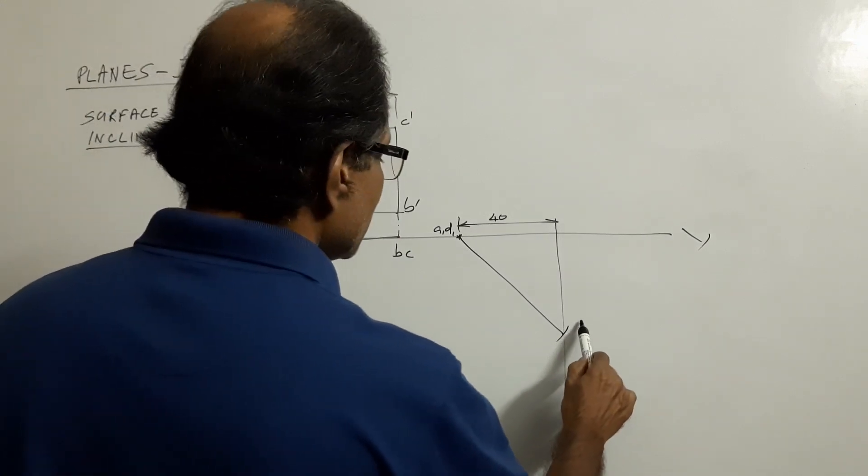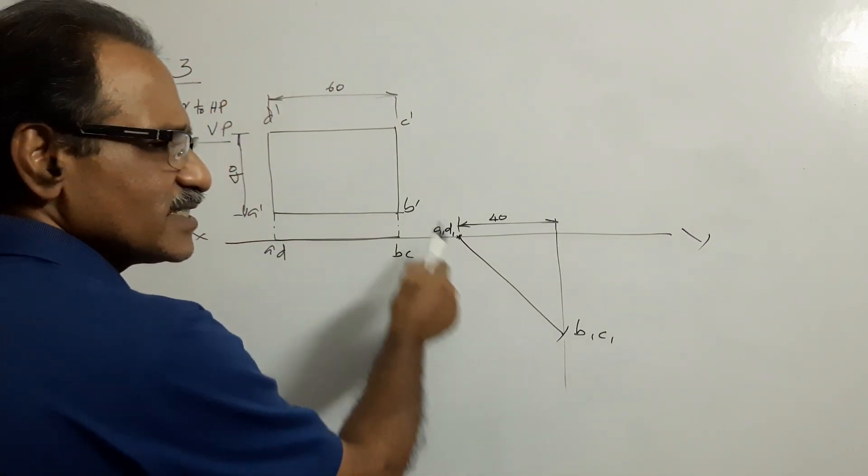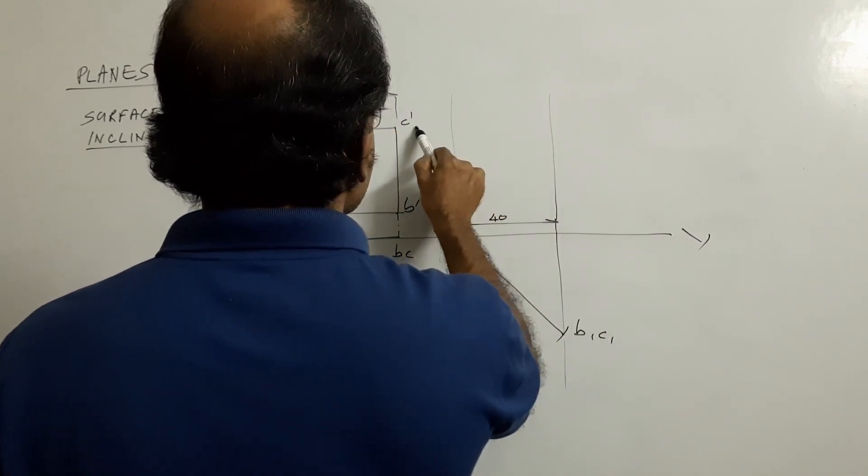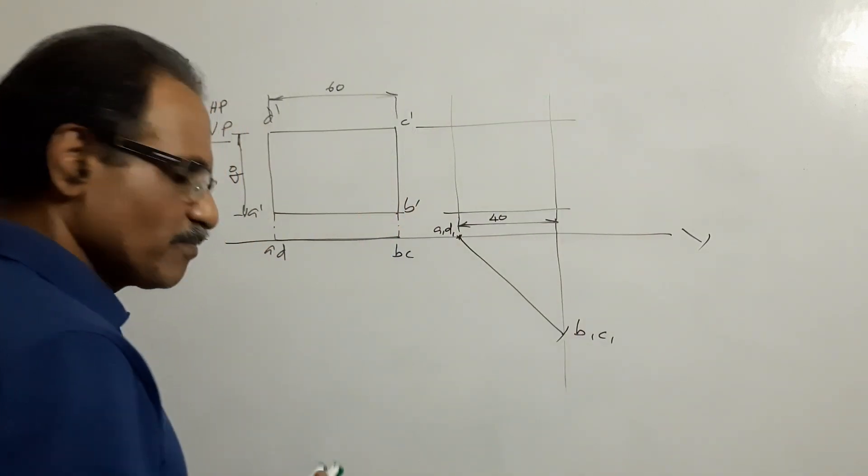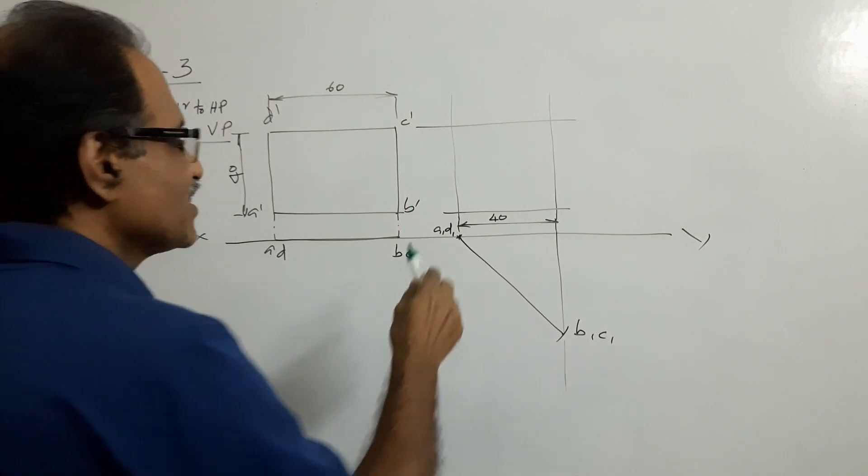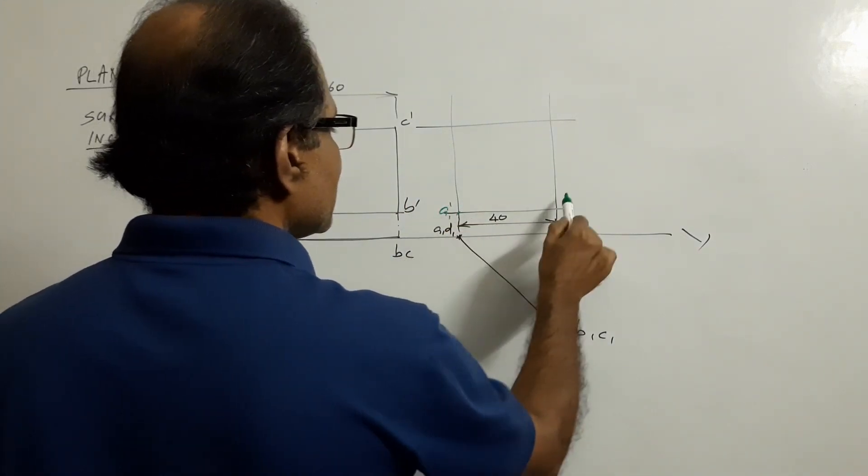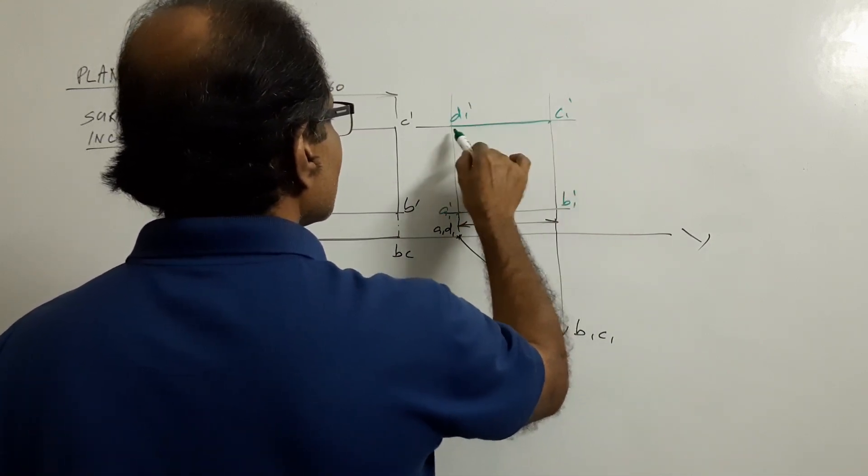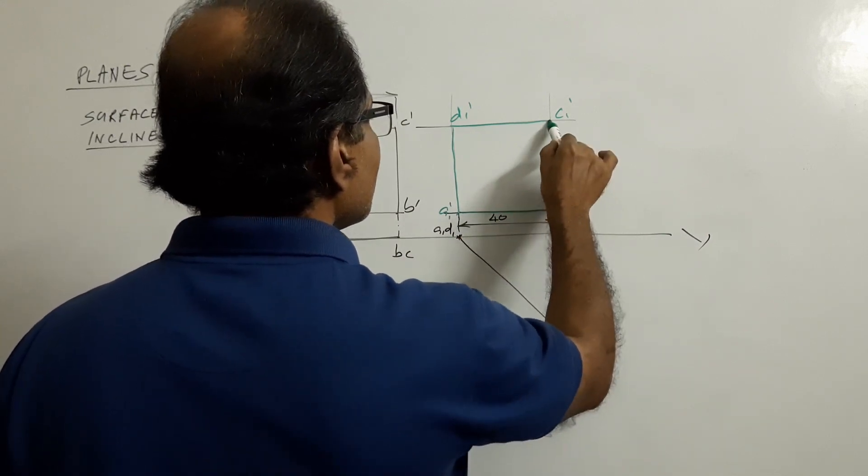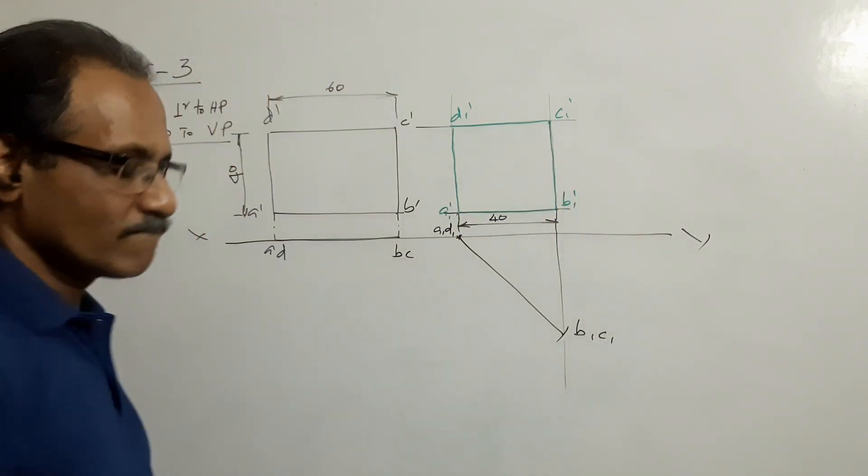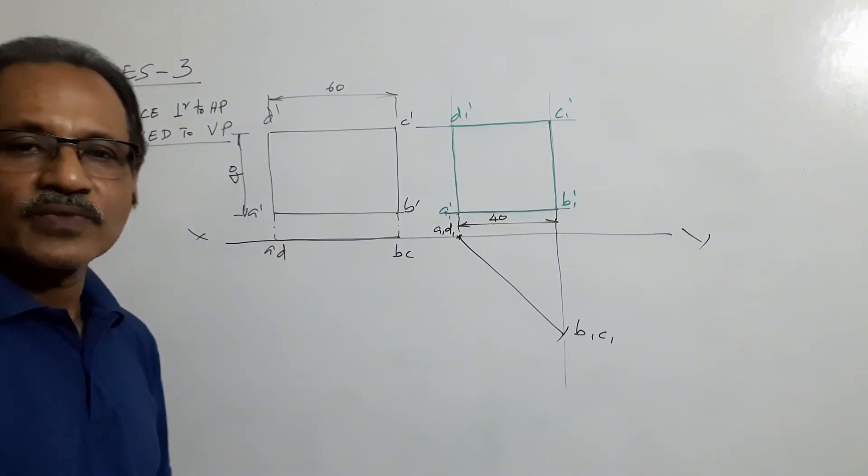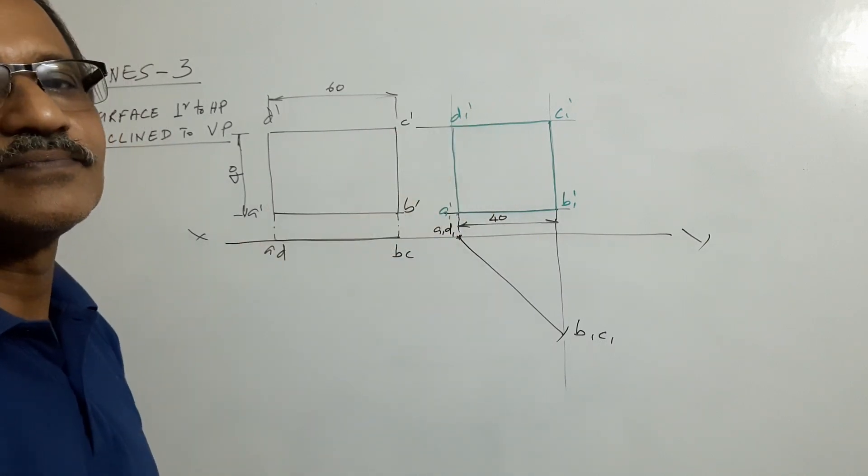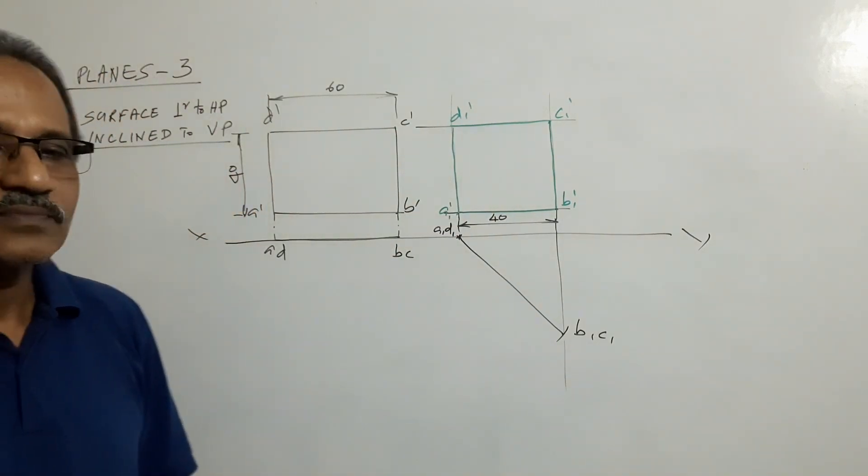What is this? This is B1, C1. What is this? This is the final plan. Draw vertical projectors. Draw horizontal projectors. What do you get? You get the final elevation. What is it? A square. A1 dash, D1 dash, C1 dash, B1 dash. Connect. Final plan and elevation. The requirement is fulfilled. Agreed? That is the first problem in this category.